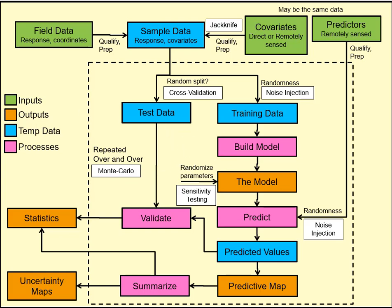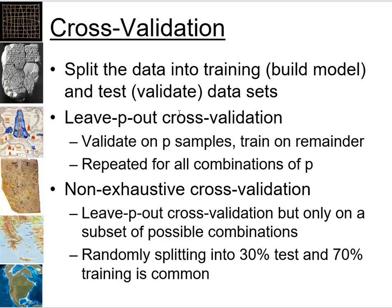Cross-validation is definitely the most commonly used and most important of these methods — you really need it in any modeling paper to get it published. The idea is to split the data into training and test sets: build the model with the training data and validate it with the test data. There are two general categories. Leave-p-out cross-validation validates on some number of samples and trains on the remainder, repeating for all combinations. Non-exhaustive does the same but only on a subset of combinations.